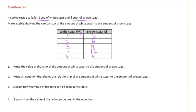Write the value of the ratio of the amount of white sugar to the amount of brown sugar. The value is the smallest ratio, basically the ratio in simplest form, which is seen in the first row. We can't get much smaller than one, so the value of white sugar to brown sugar would be one to three.